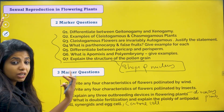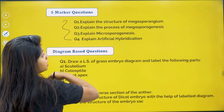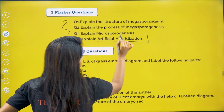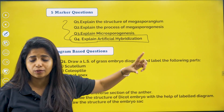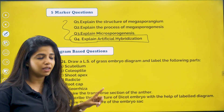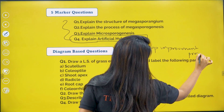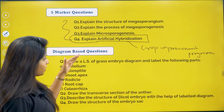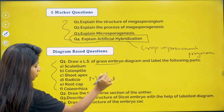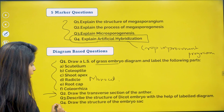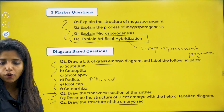Explain the structure of megasporangium, megasporogenesis, microsporogenesis. What is artificial hybridization? This question can be asked in different ways — what is the crop improvement program that was introduced? It was artificial hybridization. Diagram-based questions: LS of grass embryo — grass is a monocot, so you have to label all parts of the monocot embryo. Then transverse section of the anther. Describe the structure of the dicot embryo, and the structure of the embryo sac — all of this is very, very important.